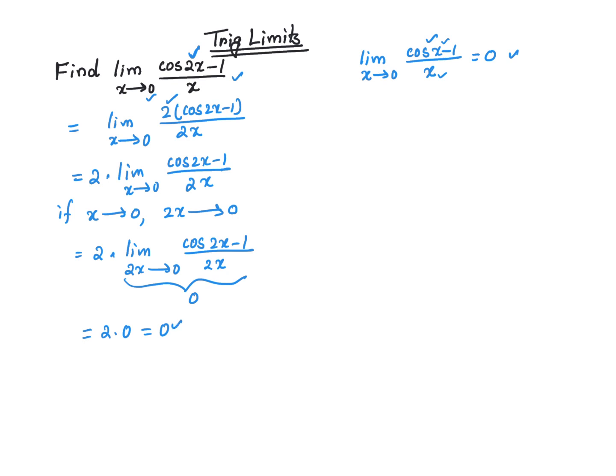So the limit is 0. Now, here, please note that this is structurally similar: x approaches 0 and cosine of x minus 1 divided by x compared to 2x approaches 0, cosine of 2x minus 1 divided by 2x. So structurally make sure that they are similar.